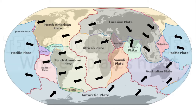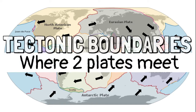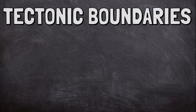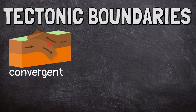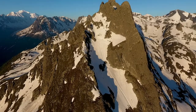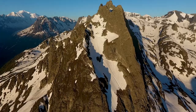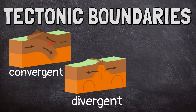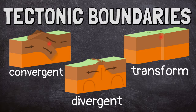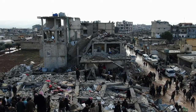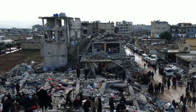Places where two plates meet are called tectonic boundaries. There are three different types of boundaries. A convergent boundary is found where two plates are pushing towards each other — mountain ranges and volcanoes often form along convergent boundaries. A divergent boundary happens when two plates are pulling away from each other. A transform boundary is found where two plates are sliding past each other in opposite directions, and earthquakes are very common along transform boundaries.